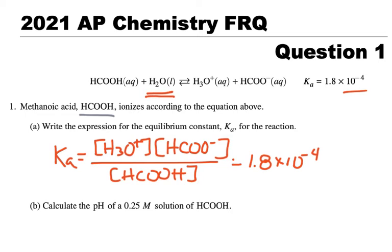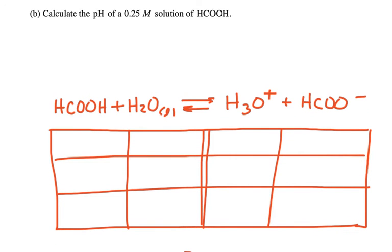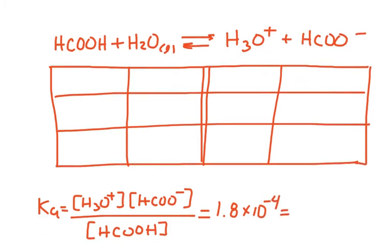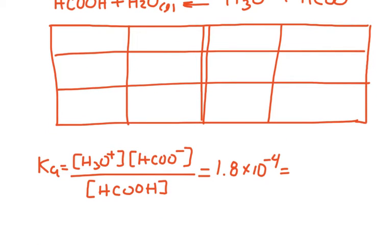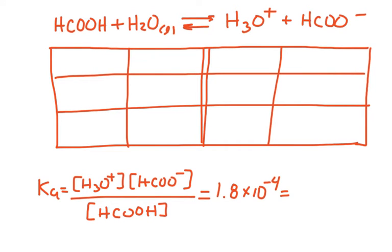Next thing we want to do is calculate the pH of a 0.25 molar solution of this methanoic acid, which is also called formic acid. Now, this is going to be in equilibrium, so I'm going to go ahead and use this ICE box. And we're also going to have to be using this expression. So starting here, we'll say this is an ICE box, because the first row, top row over here, this is the initial values that we have.